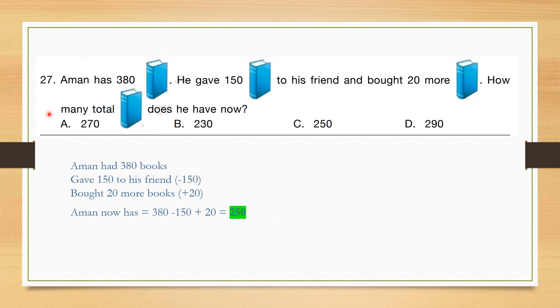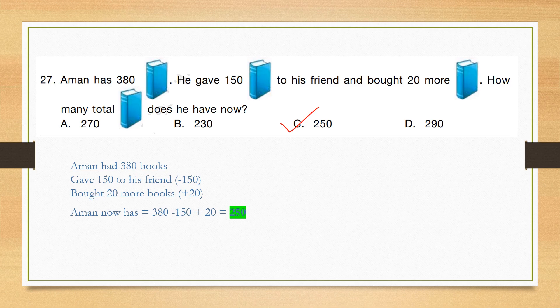Question number 27: Aman has 380 books. He gave 150 to his friend and bought 20 more books. How many total books does he have now? Initially 380, minus 150, plus 20: 380 minus 150 plus 20 equals 250. Correct answer is option C, 250.